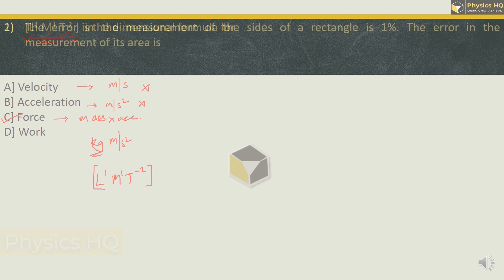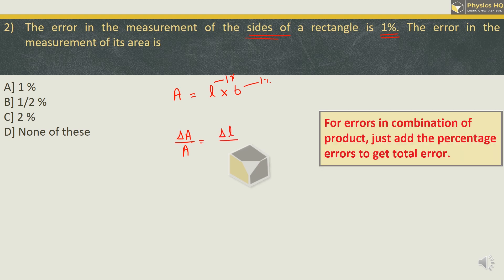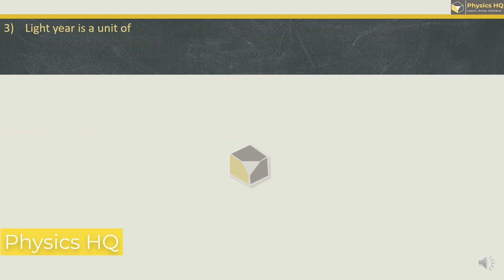Let us go ahead to the next sum. The error in the measurement of the sides of a rectangle is 1%. The error in the measurement of its area is 1, 1/2, 2, or none of this. Area of rectangle is calculated by the formula length into breadth. And they said that in the measurement of size there is this error of 1%. So there is 1% error for measurement in length as well as 1% in measurement of breadth. So to find error in area the simple formula is just add up the error in length and the error in breadth. So we got 1% plus 1% which is equal to 2%.